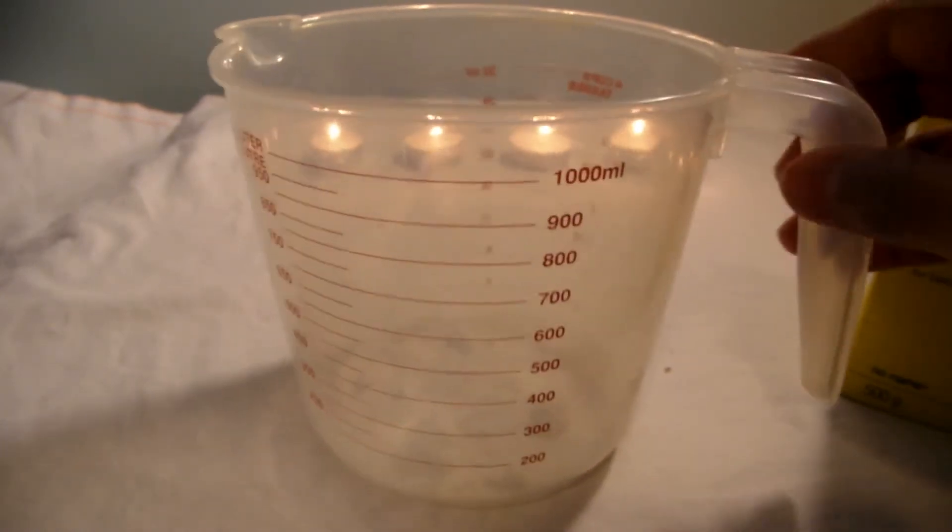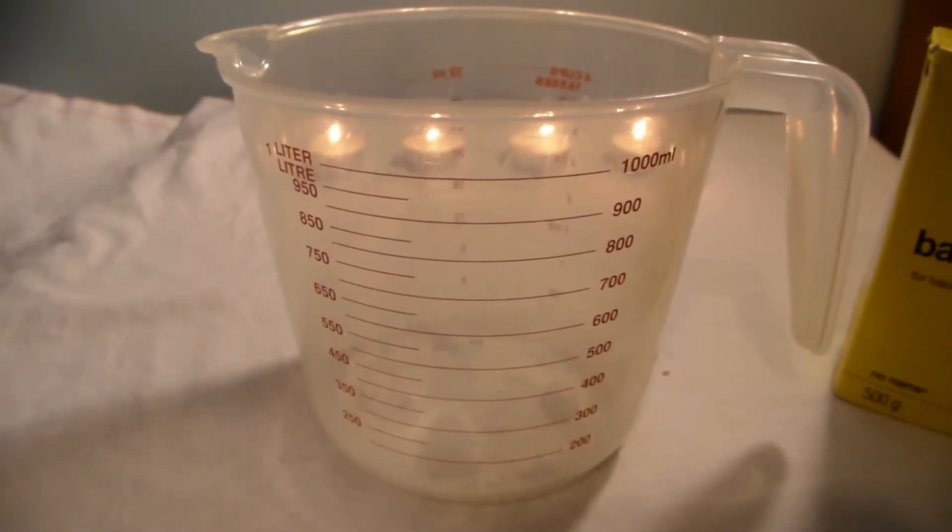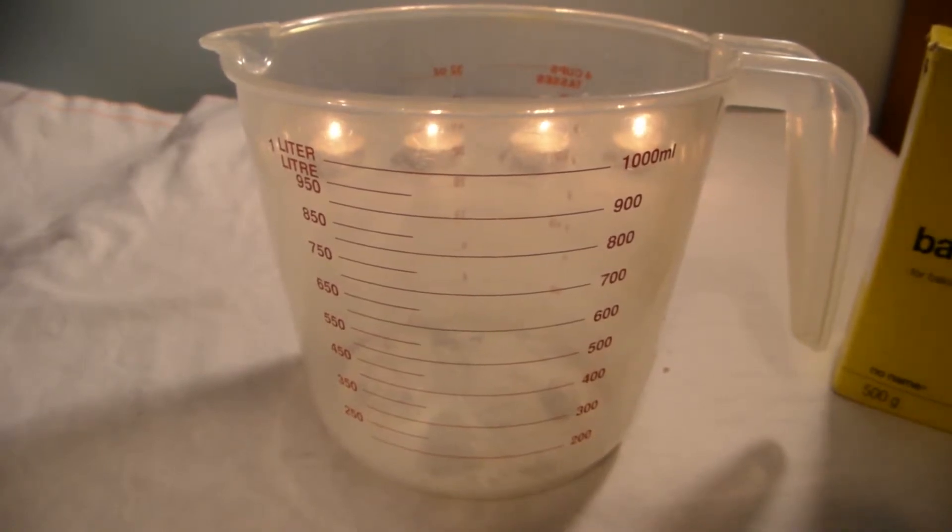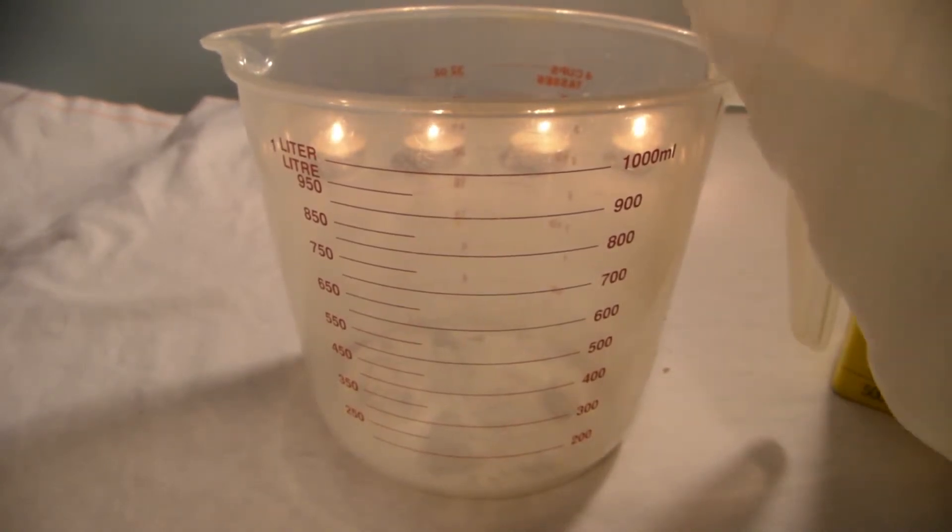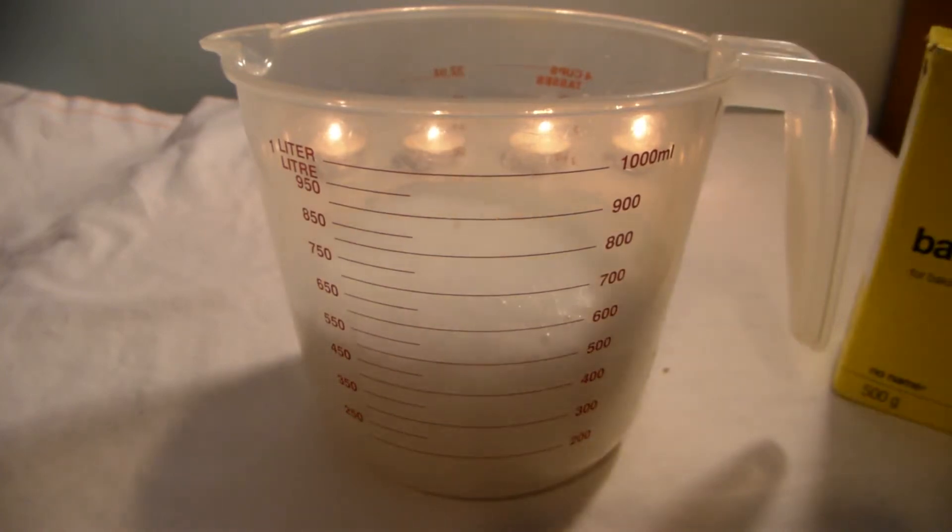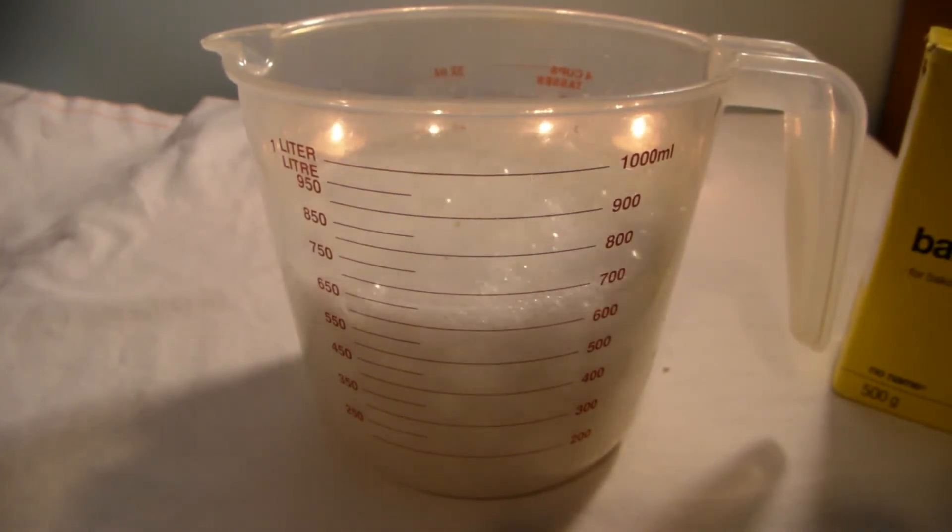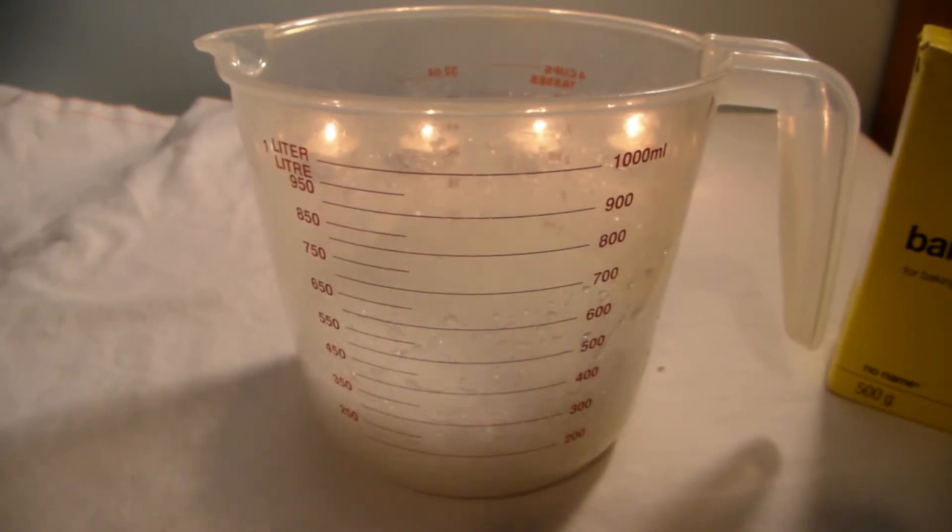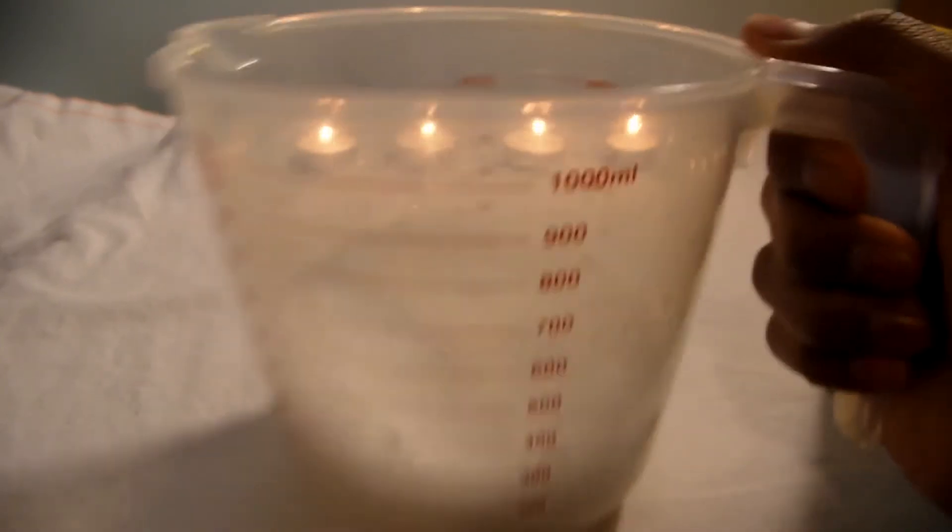Then what you're going to do is take some vinegar and put some into the measuring cup. You have to let the baking soda and vinegar settle down a little bit.